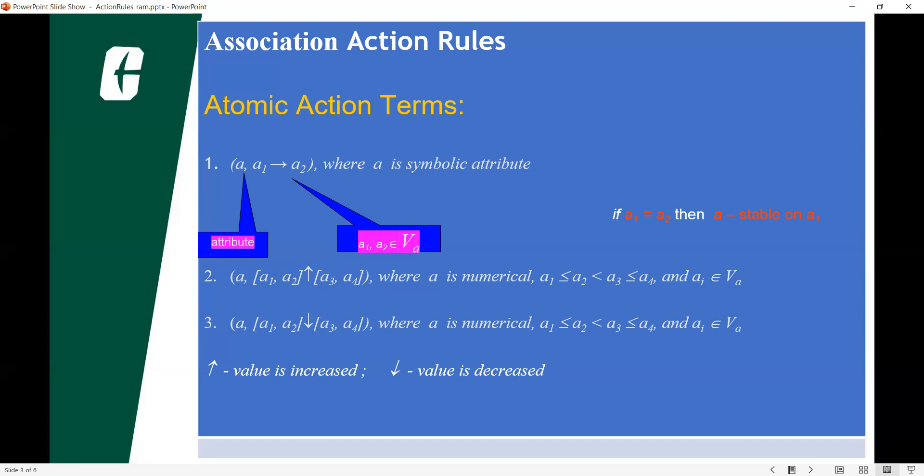Confidence refers to the amount of times a given rule turns out to be true in practice. A rule may show strong correlation in a data set because it appears very often but may occur far less when it applies.